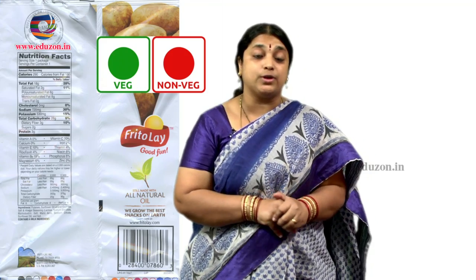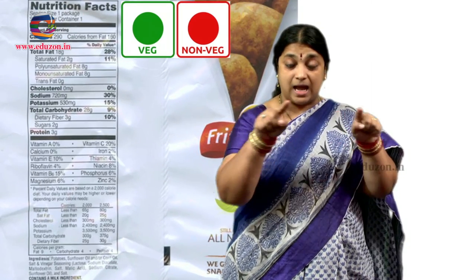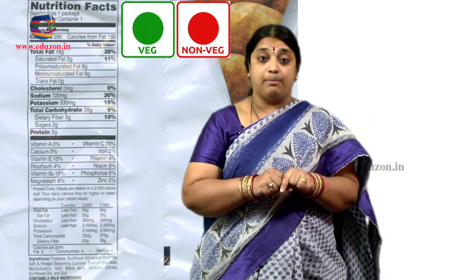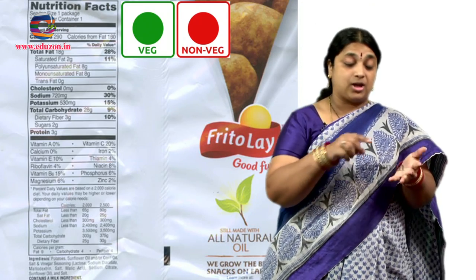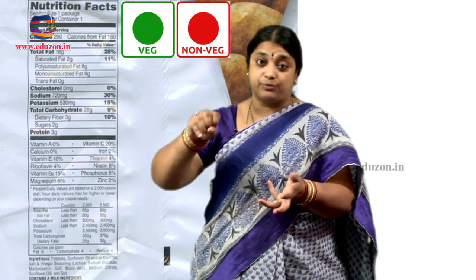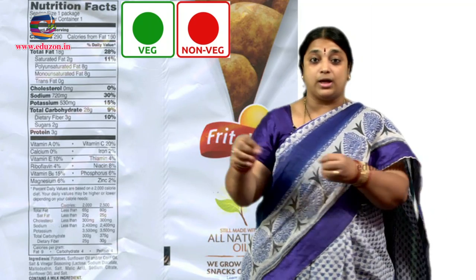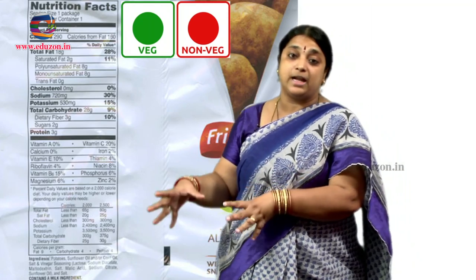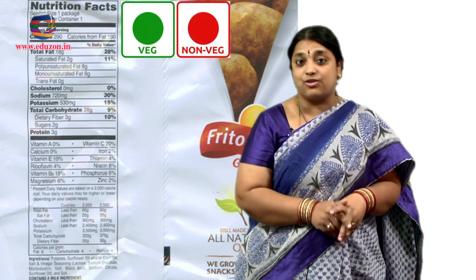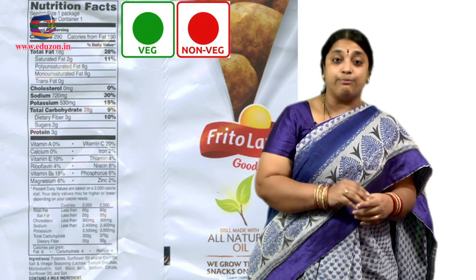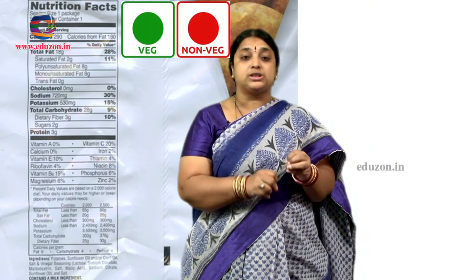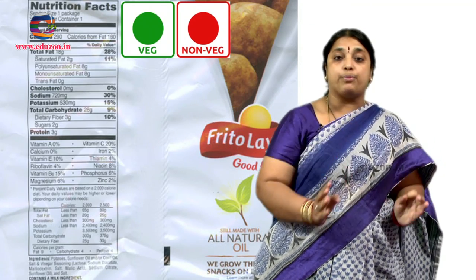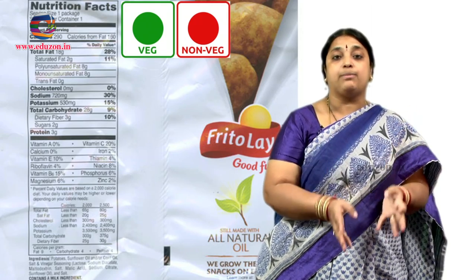We also find a big chart or a small chart on the product which tells us that carbohydrates is some 15 percent, fats is 20 percent, and proteins are 28 percent. We do find all these food components available on that product.